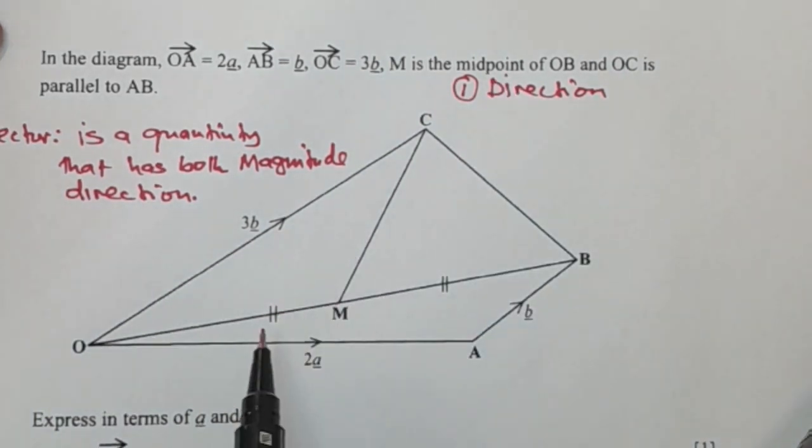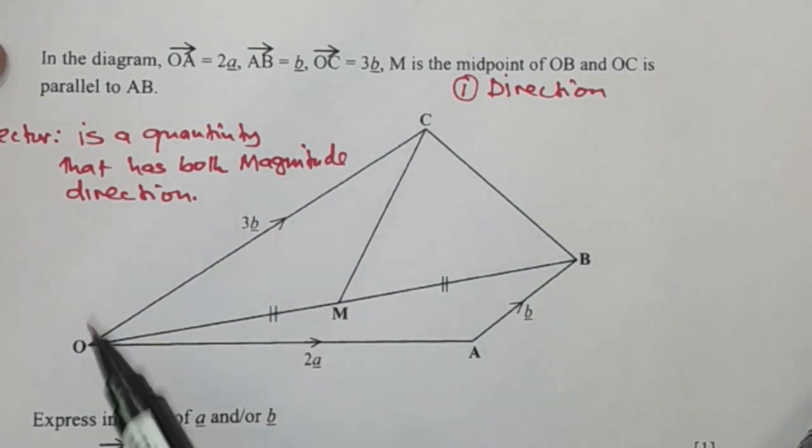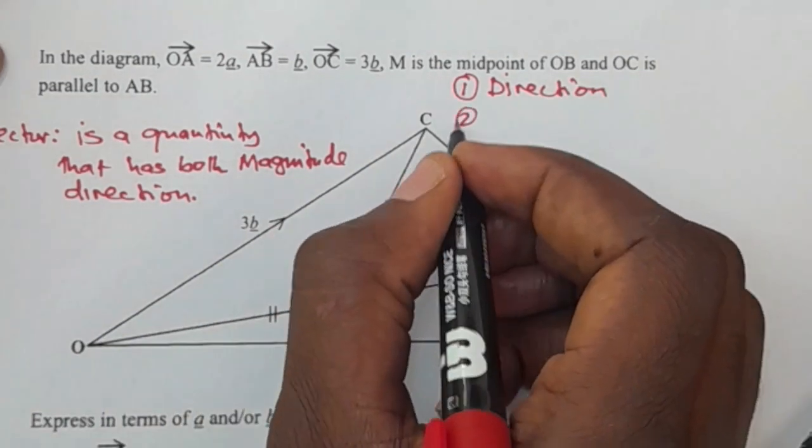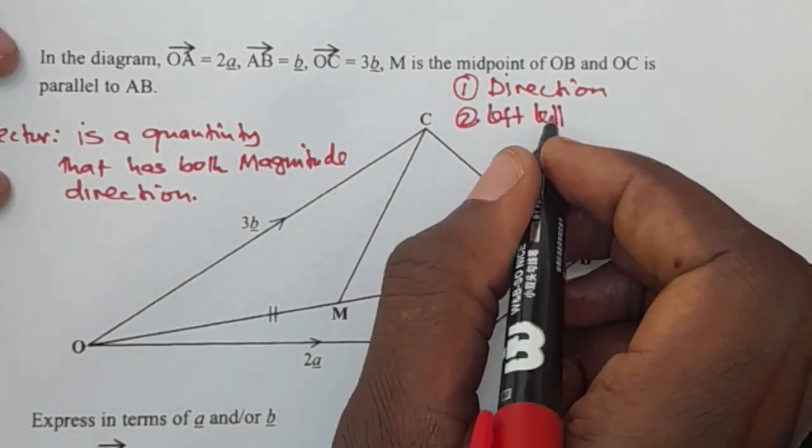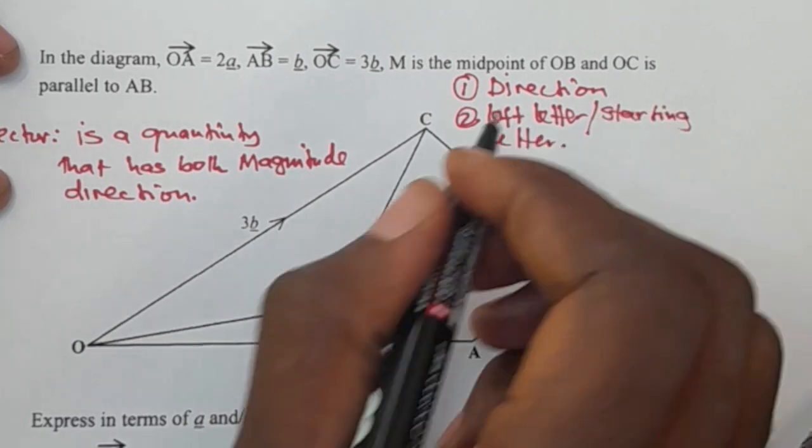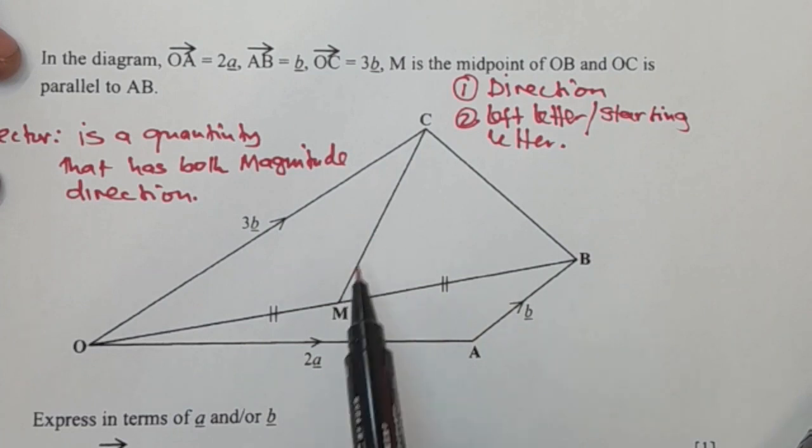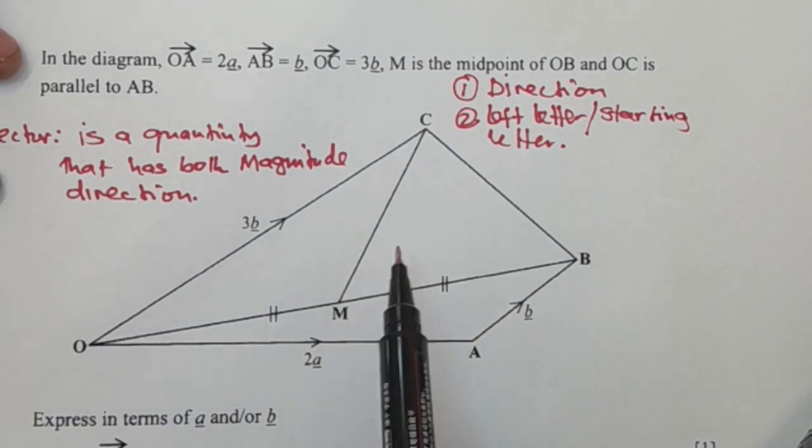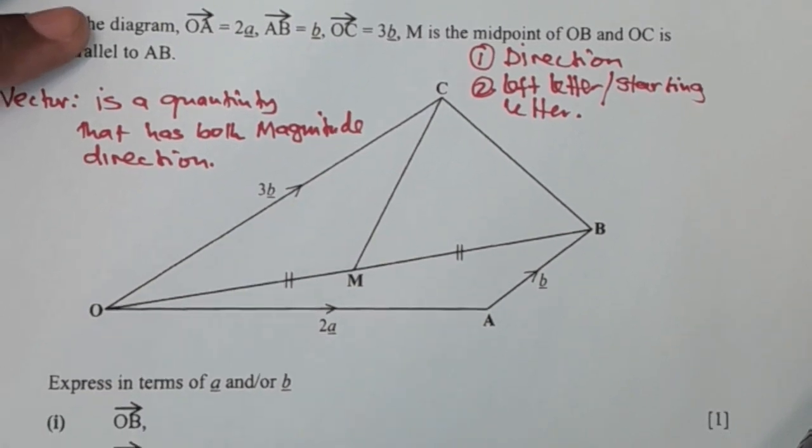Number one, you need to consider the direction of a vector or the direction of movement. When you look at this diagram, the direction of vectors is being shown by the arrows. Number two, you need to consider the left letter or starting letter. I'll explain in a bit as we'll be answering the questions.